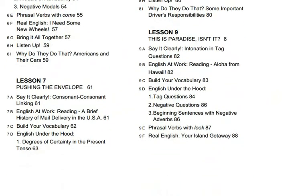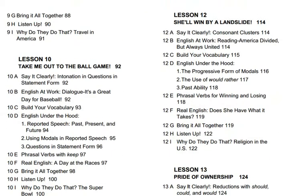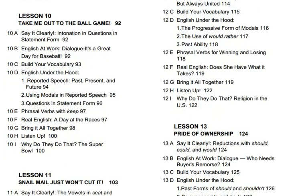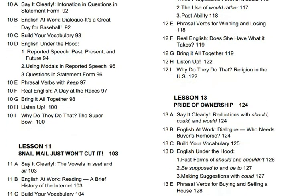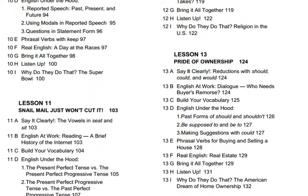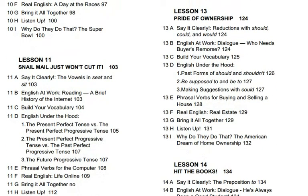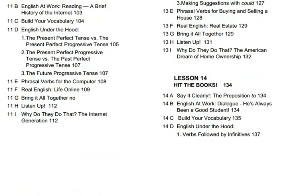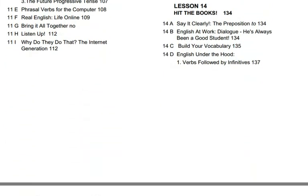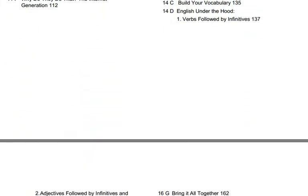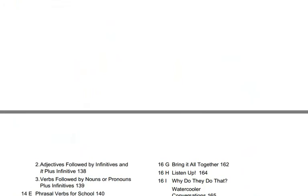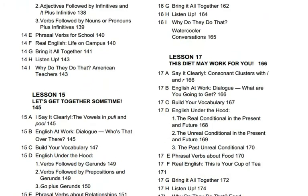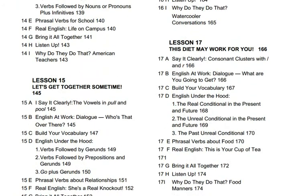This vowel is pronounced by placing the tip of your tongue behind your lower teeth. Now, pull your lips apart and your tongue back. Be sure to keep the tip of your tongue low in your mouth and behind your lower tooth ridge. And notice that this vowel can become rather nasal before n, m, and ng.